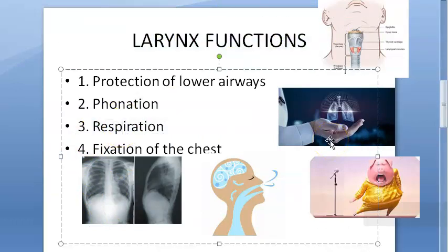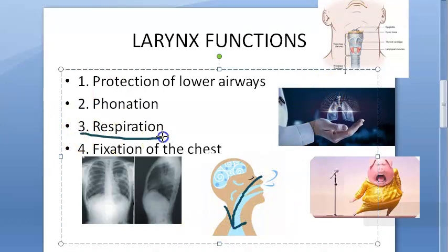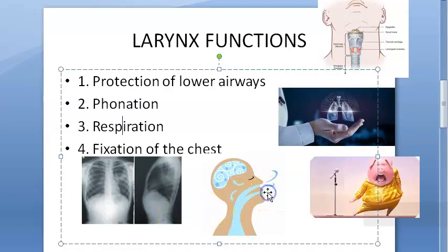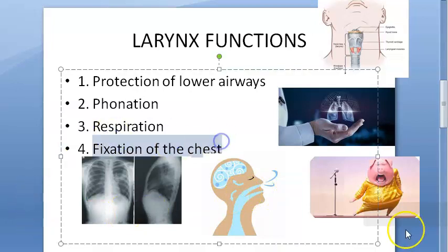Now for respiration: the larynx regulates the flow of air into the lungs. For air to reach the lungs, it must pass through the larynx. The vocal cords abduct during inspiration so that air can flow in. During expiration the vocal cords adduct — and it is only when they adduct that voice is produced. So abduction allows breathing in, while adduction produces voice.